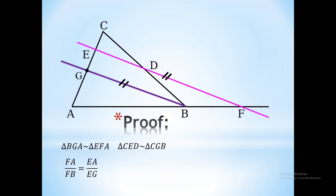After that, we can see the similarity of triangles CED and CGB. From that similarity of those two triangles, we can conclude that the length of line DB over the length of line DC equals the length of line EG over the length of line EC.